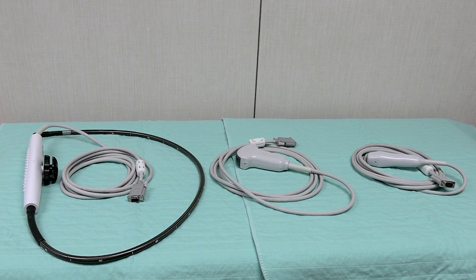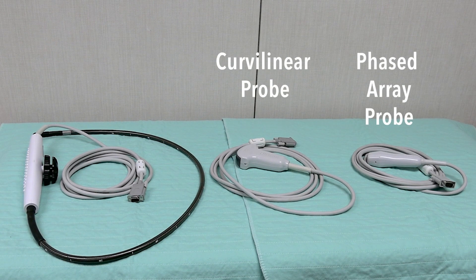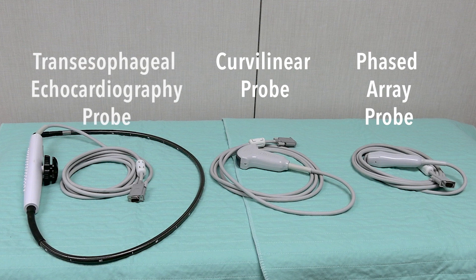Here at Wiser, we have three different transducers: a phased array probe, a curvilinear probe, and a transesophageal echocardiography probe, also known as a TEE probe.